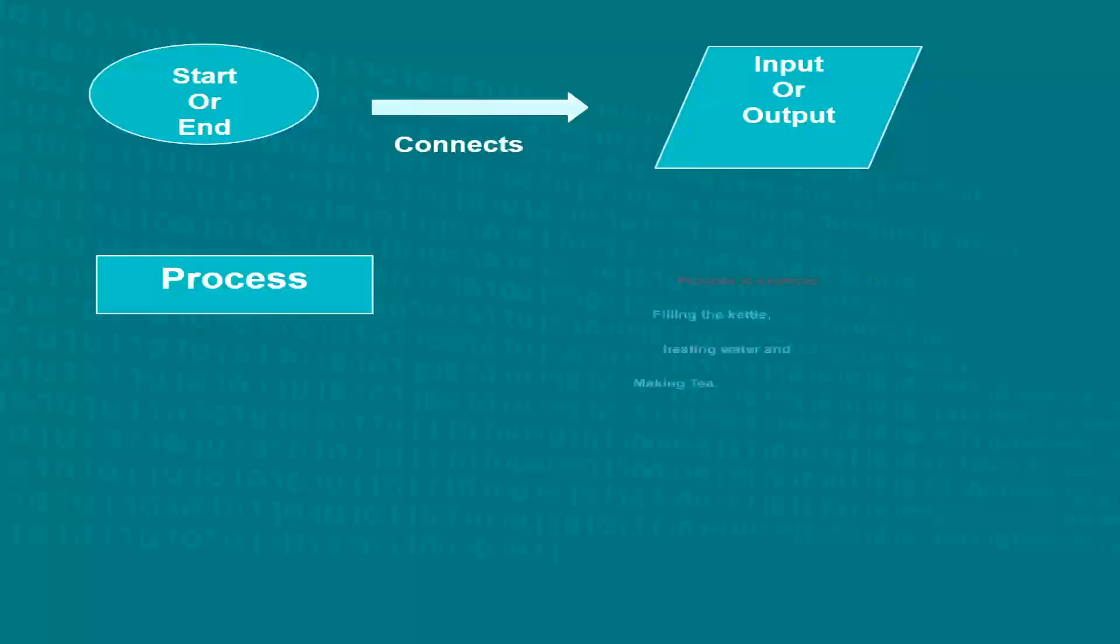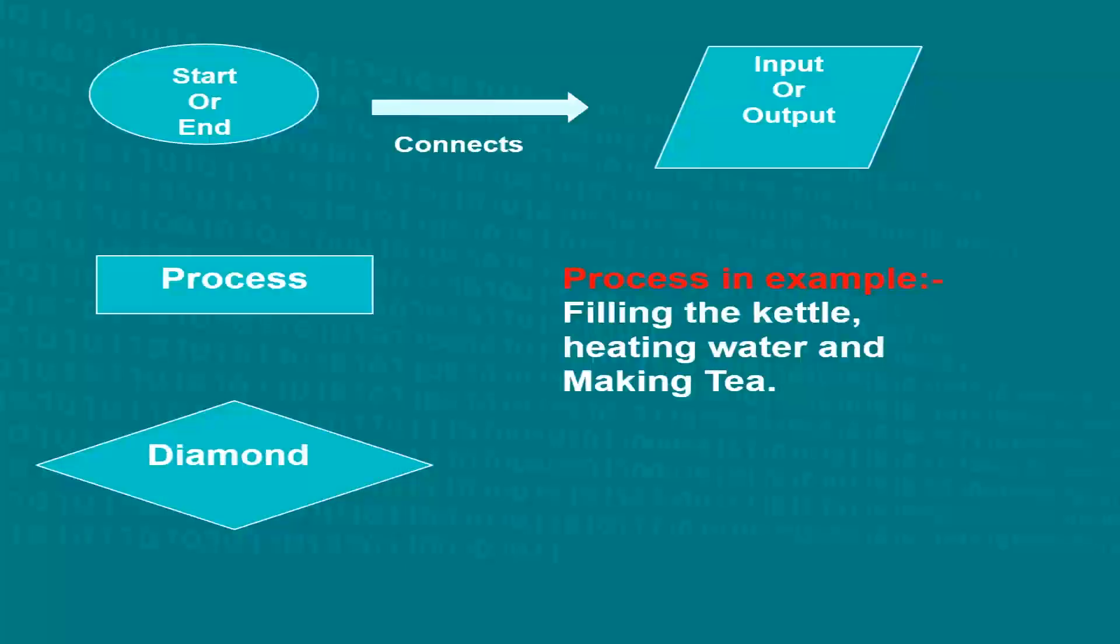In the diagram, filling the kettle, heating water and making tea represents a process. And a diamond indicates a decision, either yes or no. Like in the diagram, a decision is to be made, has the water been boiled? That's the question in the diamond shape. These are some of the most commonly used shapes in a flowchart.